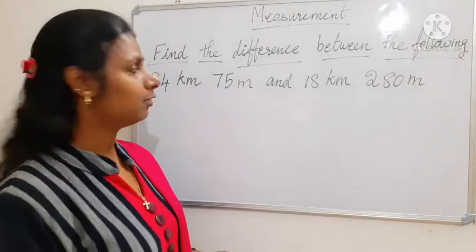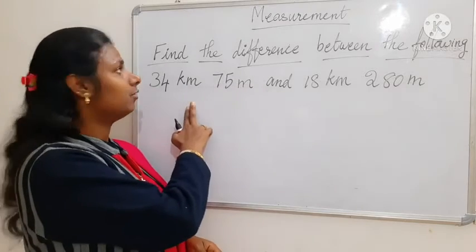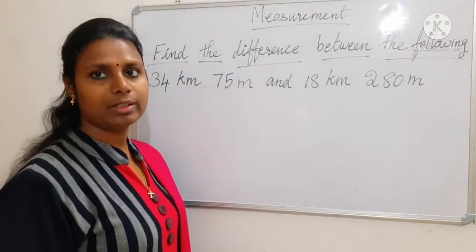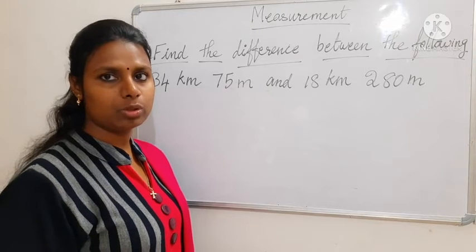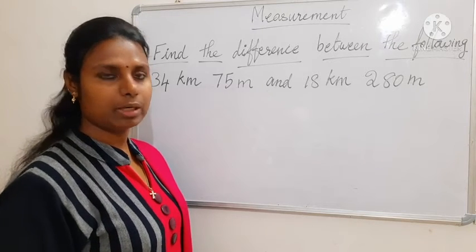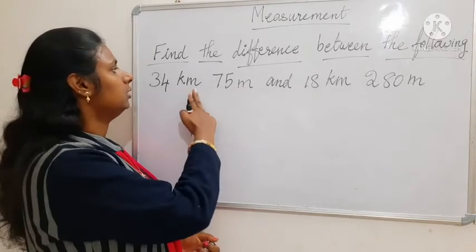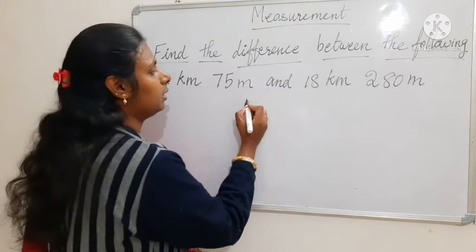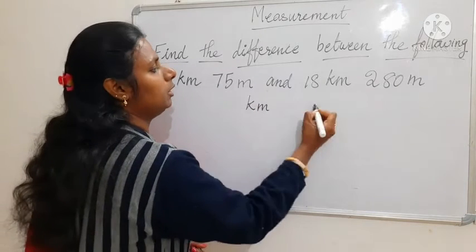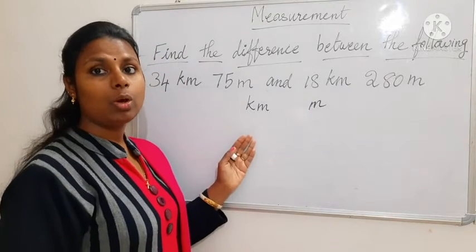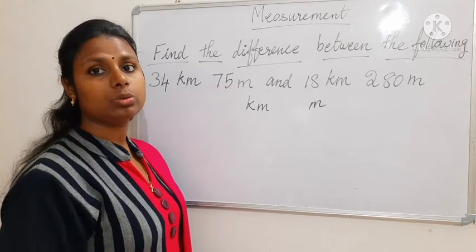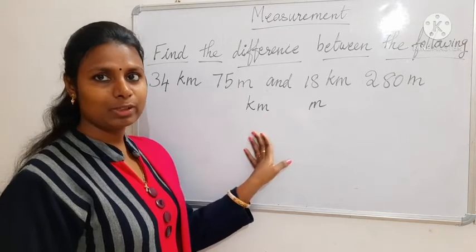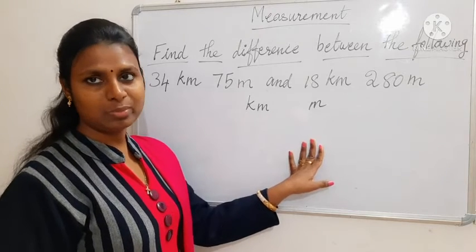Shall we start the first one. Here in the question they have given: find the difference between the following. So we are going to find the difference, that means we are going to subtract. Here: 34 km and 75 m. So let me write the unit first: km and m. You know that 1 km is equal to 1000 m.